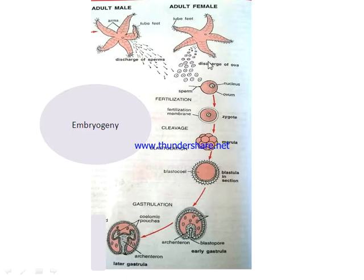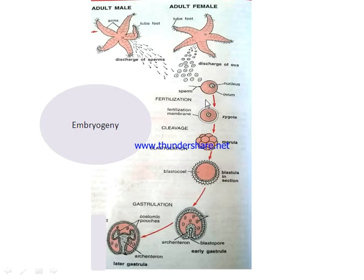Since the gametes are released freely in the seawater, which is the habitat of starfish, the fertilization occurs in seawater only. Therefore, this kind of fertilization is called external fertilization. In this case, the sperm fuses with the ovum and only the nucleus and cytoplasm of the sperm enter into the ovum while the flagella is left outside. This results in the formation of a zygote. After formation, this zygote develops a membrane called the fertilization membrane around it, which will prevent the entry of another sperm into the ovum.